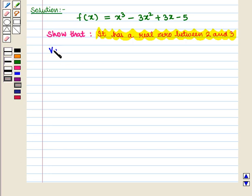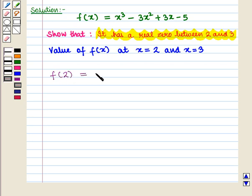Now, let us find the value of the given function f(x) at x = 2 and x = 3. So, f(2) will be equal to 2³ - 3(2²) + 3(2) - 5.